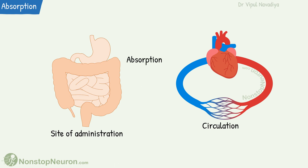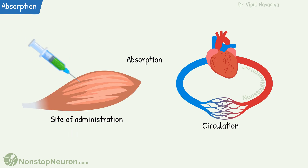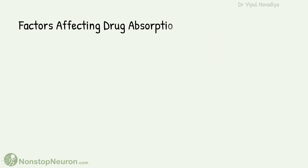Absorption is the movement of a substance from its site of administration into circulation. For example, if the drug is given by oral route, absorption would be the process of moving the drug from the lumen of the gastrointestinal tract into the blood circulation. And if the drug is given by intramuscular route, absorption is the movement of the drug from that muscle into the circulation.